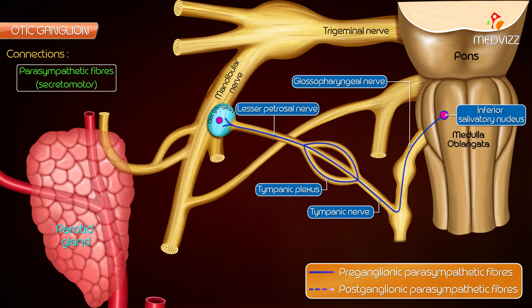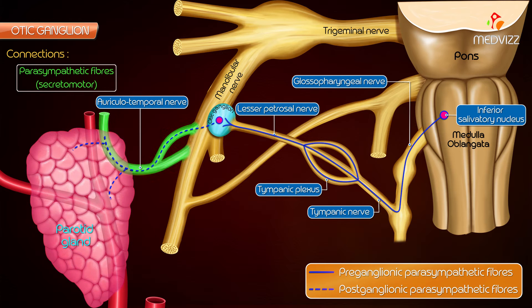Postganglionic parasympathetic fibers, from the ganglion, pass through the auriculotemporal nerve to supply the parotid gland.